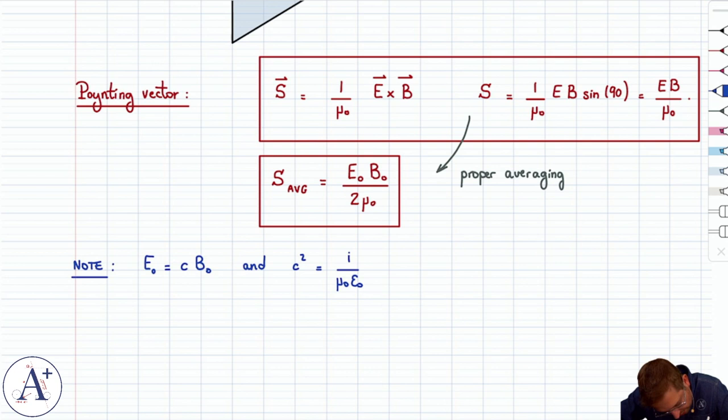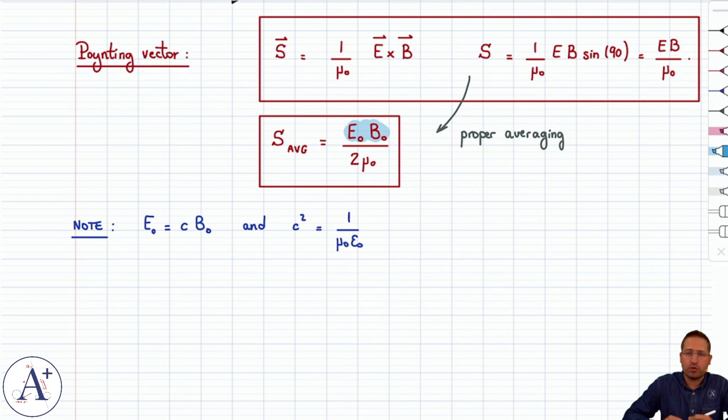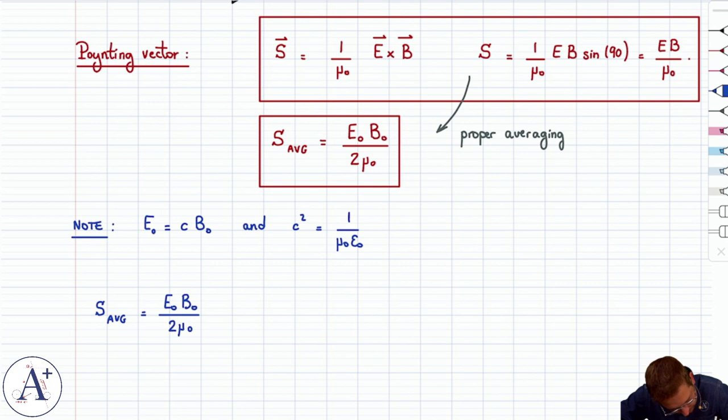The result of having these two formulas means that you can get different variations of S average. For instance, you might not want to express S average in terms of E₀ and B₀ because maybe you only know E₀ or you only know B₀. So what you could do is the following. You could say that S average, by definition, is E₀ B₀ over 2μ₀. But you could then say that B₀ is E₀ over C, so that would be E₀² over 2μ₀C.